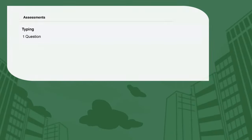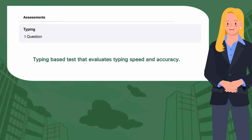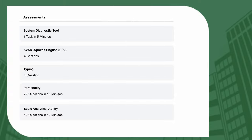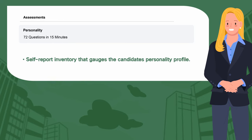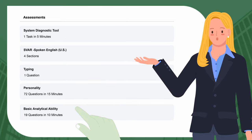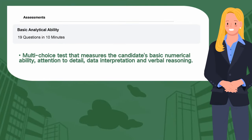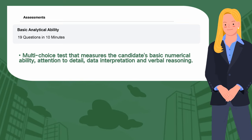Step 7. Typing Test — a typing-based test that evaluates typing speed and accuracy. Personality — 72 questions in 15 minutes, a self-report inventory that gauges the candidate's personality profile. Basic Analytical Ability — 19 questions in 10 minutes, a multiple-choice test that measures the candidate's basic numerical ability, attention to detail, data interpretation, and verbal reasoning.